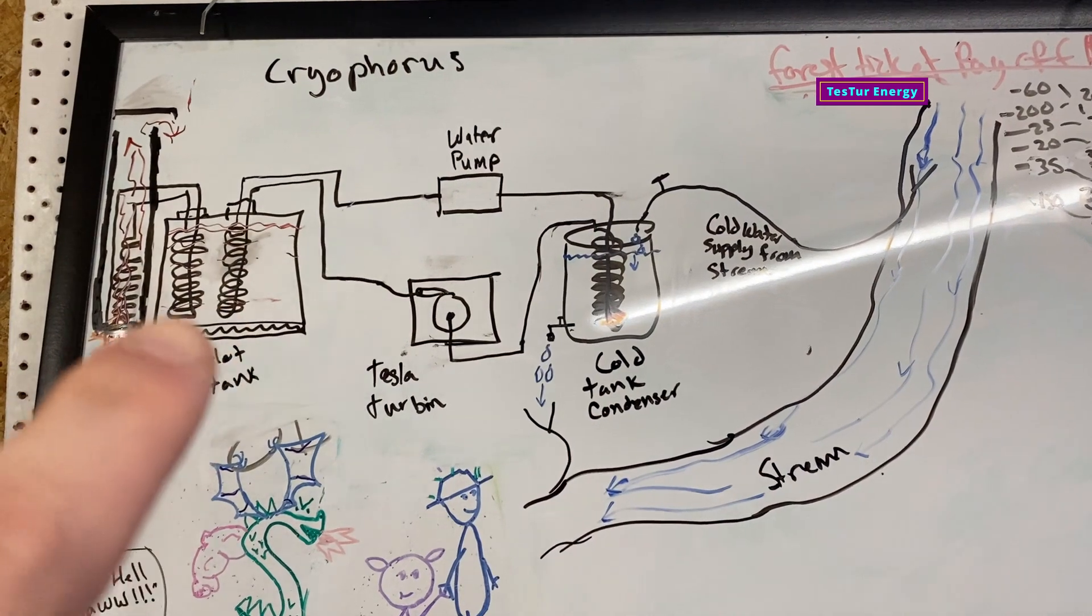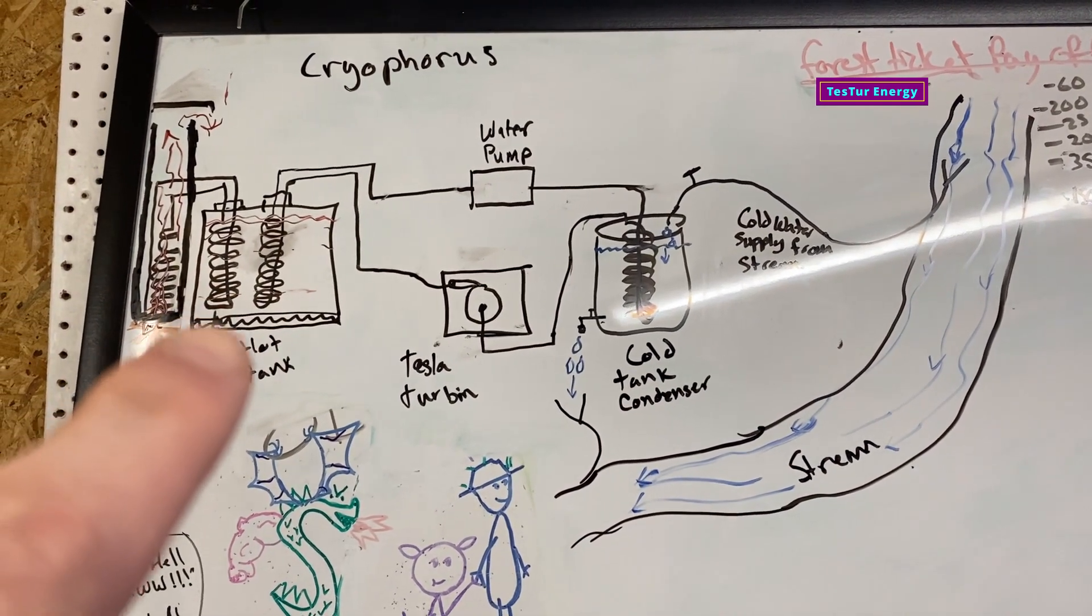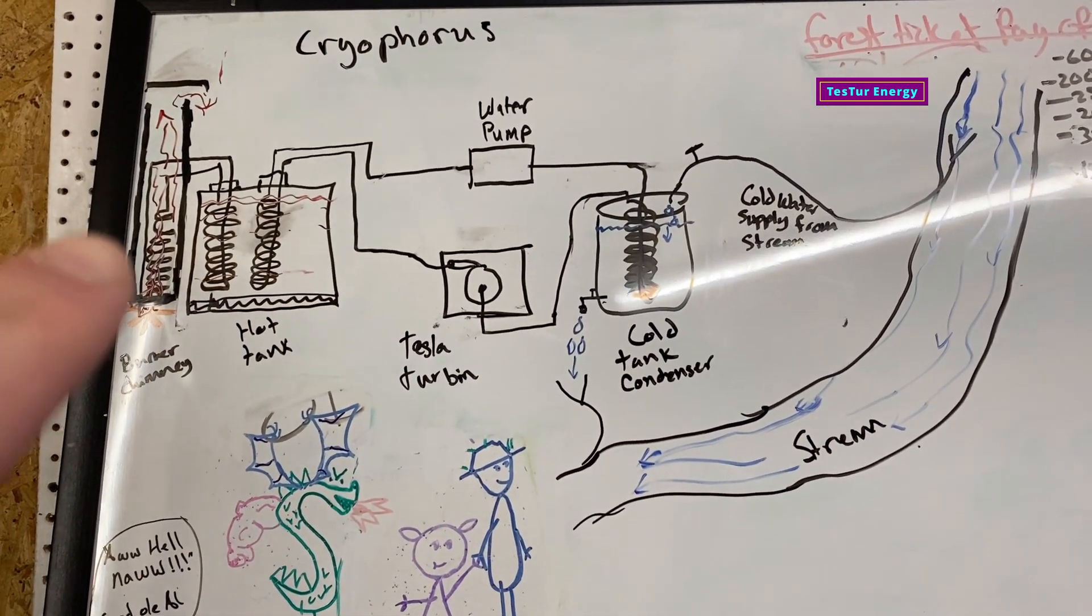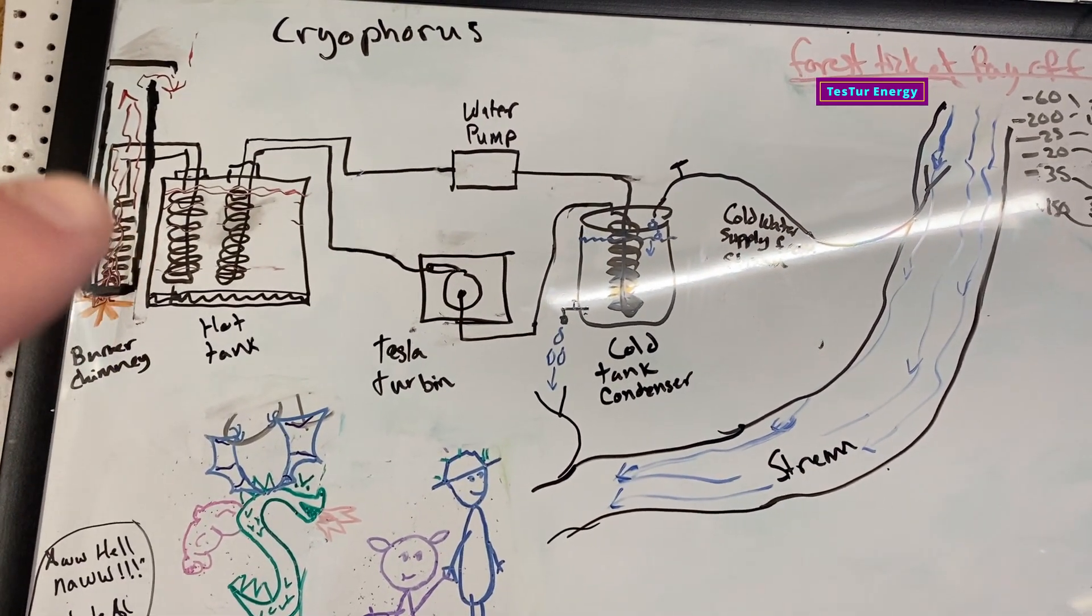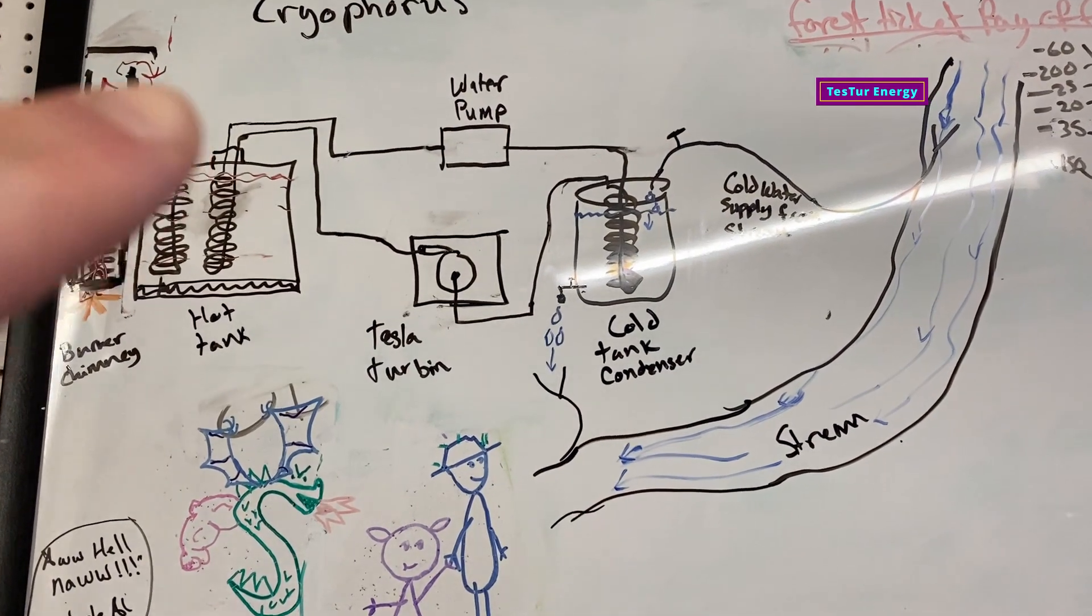How we heat the hot tank - I believe Kenny or Ken you're going to be doing the burner - so you just have a chimney burner and the coil that goes through the chimney and the flame goes past the coil.